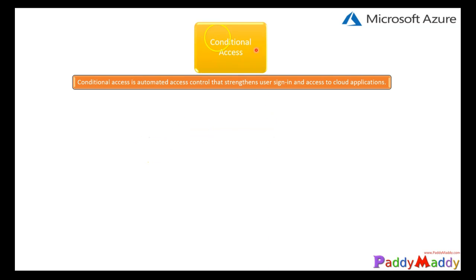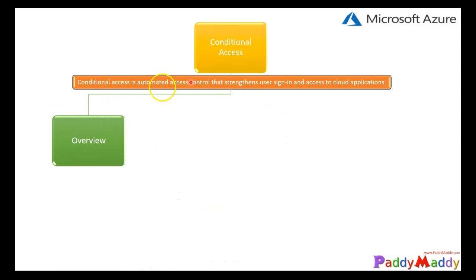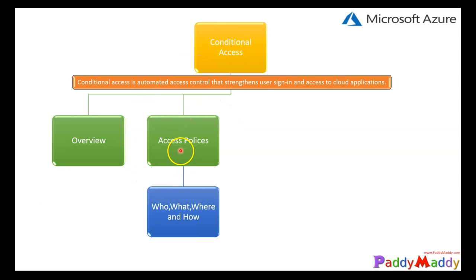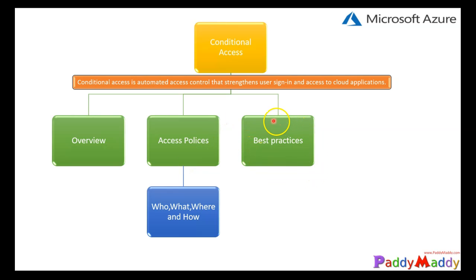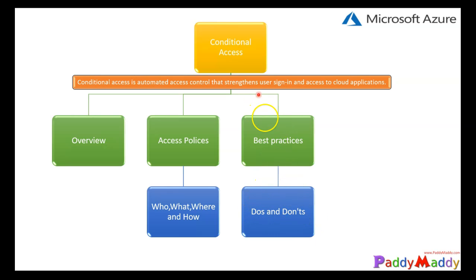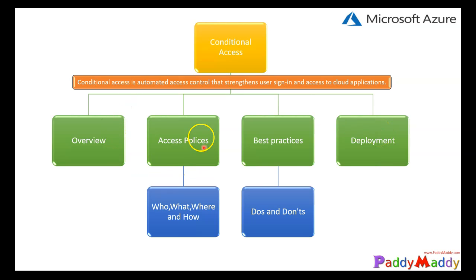Conditional access is an automated access control that strengthens your user's sign-in and access to your cloud application. In this lecture, we will begin with an overview of what exactly conditional access is. Then we will jump into the policies specific to conditional access, covering who, what, where, and how. Later, we talk about best practices, including do's and don'ts, and also deployment methods.